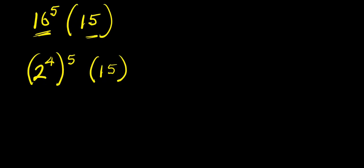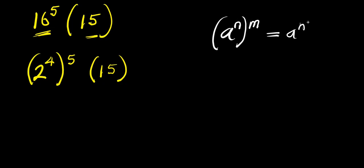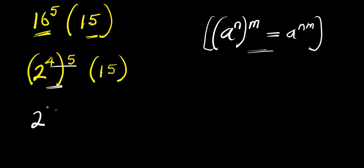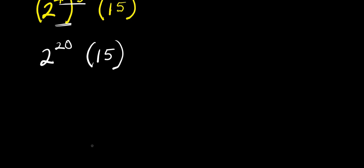Now, from here, we can apply this index identity again. We have 2 to the power of 4 times 5, that is 20, times 15. So, what we are looking for here is 2 to the power of 20, then we multiply that by 15.